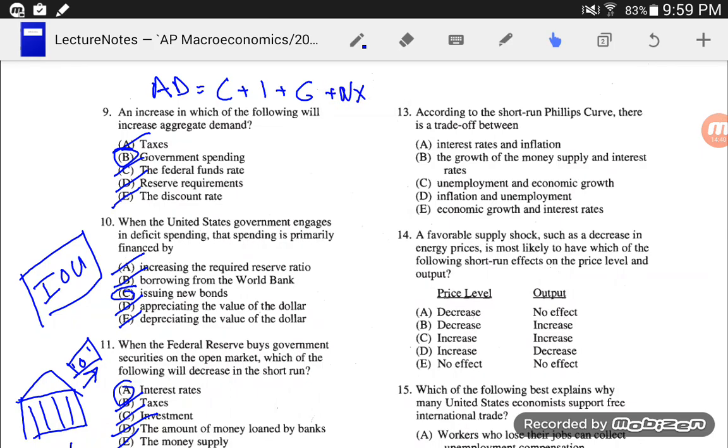Number 13, according to the short-run Phillips curve, there is a trade-off between... It doesn't compare interest rates and inflation. It doesn't have anything to do with money supply. It doesn't talk about economic growth. Because if you have economic growth, you probably end up with inflation. And there's a trade-off between unemployment and inflation, which is the correct answer. That's kind of a tempting one. But, no, it has nothing to do with interest rates there. So, short-run Phillips curve, if you remember, it looks at inflation and unemployment.